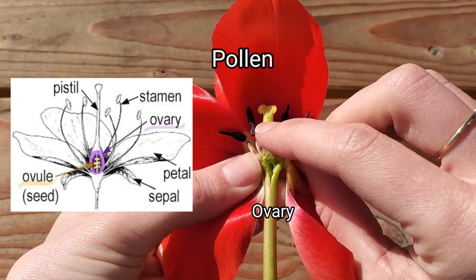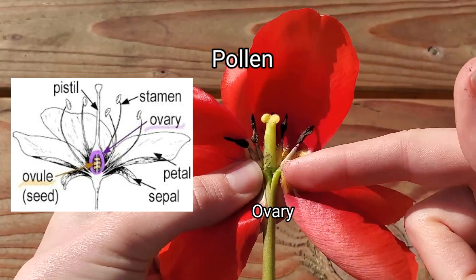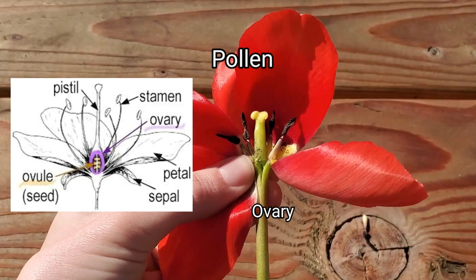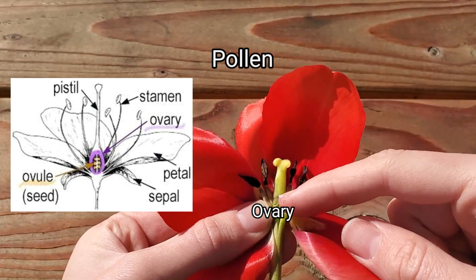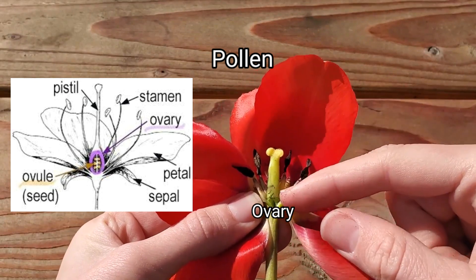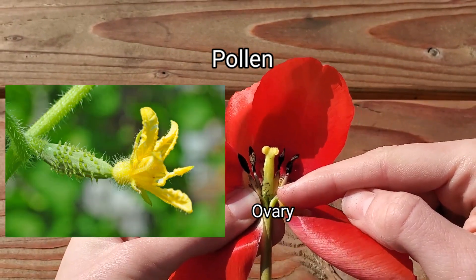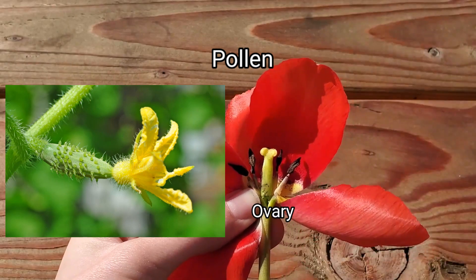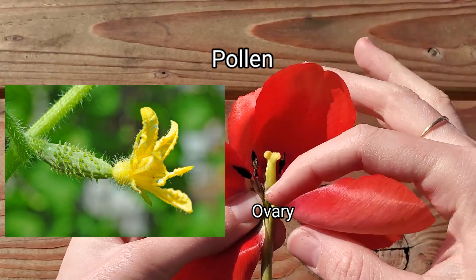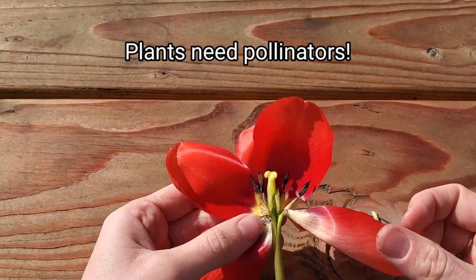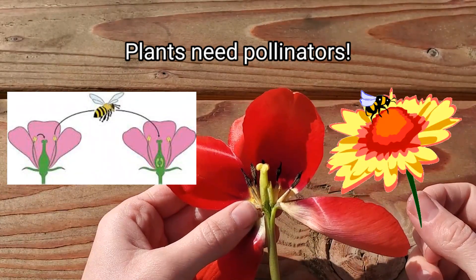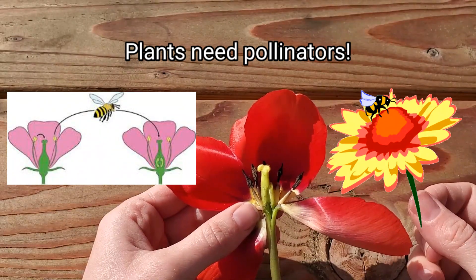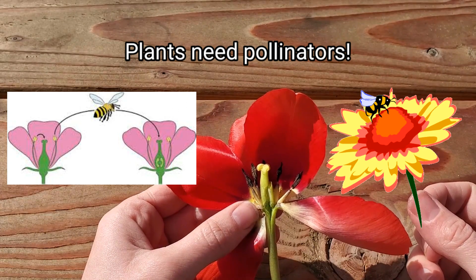Then the pollen grains will travel down these little tubes to the bottom of the flower to a part in the very center of this flower, way down here, called the ovary. If that word sounds familiar, it's because the ovary is what we call the reproductive part of a human too. So this ovary, once it's pollinated, will get bigger. In some plants, the ovary will turn into an entire fruit, like a cucumber, and that will grow the seeds inside. Because plants are stationary — meaning they don't move — they rely on pollinators like insects and other animals to help them reproduce. Some plants, like corn, even use the wind to carry their pollen.